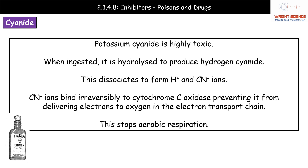Luckily these days, not such a problem. What actually happens is when potassium cyanide is ingested, it's going to be hydrolyzed into hydrogen cyanide. That hydrogen cyanide is then going to dissociate — split to form hydrogen ions H+ and cyanide ions CN−. It's those cyanide ions that are the problem because they will bind irreversibly to the enzyme cytochrome C oxidase.